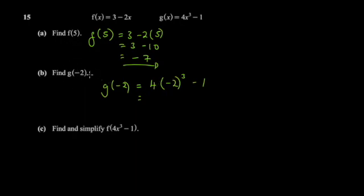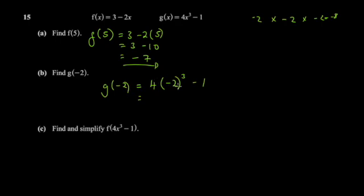They actually want to trick you — this is a negative 2. When you have a negative inside brackets and an odd number power, the negative has to be preserved. So negative 2 cubed means negative 2 times negative 2 times negative 2. Negative times negative gives positive, but you still have this remaining negative, so you get negative 8. If it's an odd power, the negative survives.